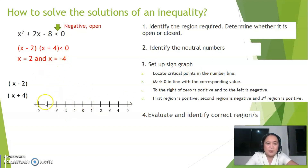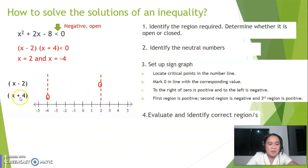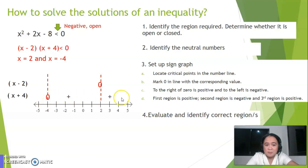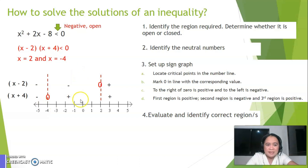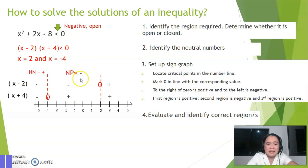Locate the critical points — negative four and positive two — on the number line. Mark zero in line with each corresponding factor: x minus two equals zero at positive two, and x plus four equals zero at negative four. To the right of zero is positive; to the left is negative. This creates three regions. First region: negative times negative equals positive. Second region: positive times negative equals negative. Third region: positive times positive equals positive.